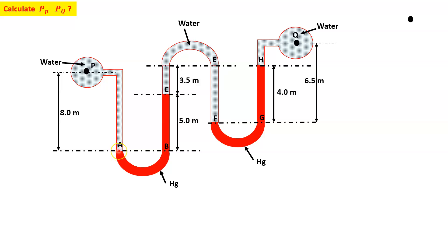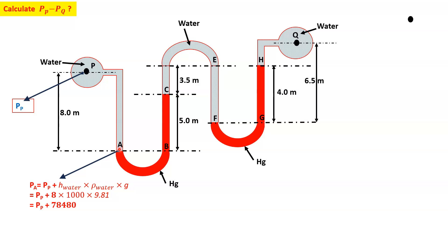At point A, the pressure will be PP plus H_water × ρ_water × g, because we are going in the downward direction so pressure will increase. Pressure at point A: PA = PP + H_water × ρ_water × g. Here H_water is 8 meters, ρ_water is 1000 kg/m³, and g is 9.81, so PA = PP + 78480.